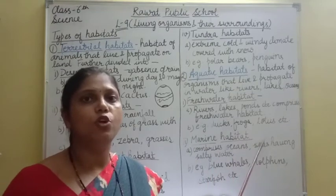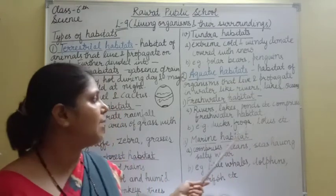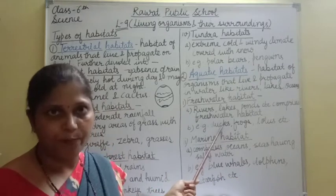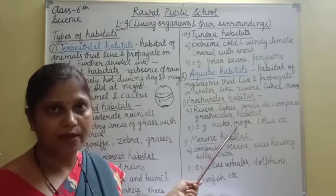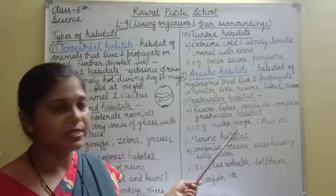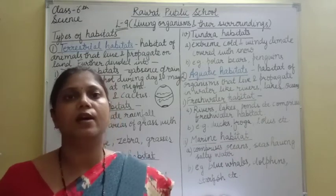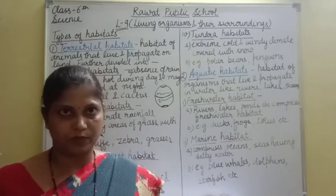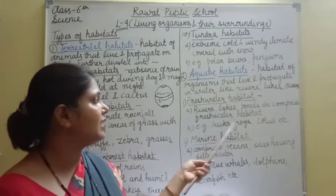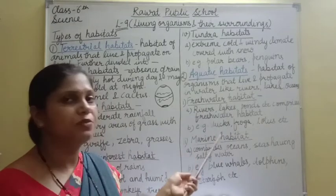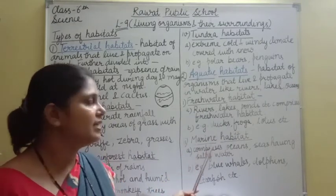Fresh water habitat के examples: ducks, frogs, lotus. आपने देखा होगा — ducks pond में रहती हैं, frogs mostly water में survive करते हैं, lotus water में bloom करता है. इसलिए यह सारे fresh water habitat में आते हैं.